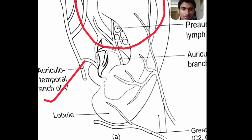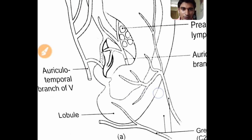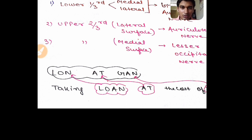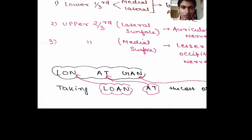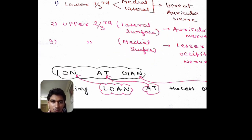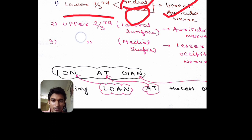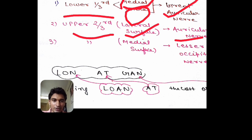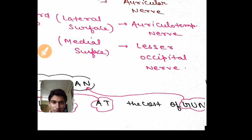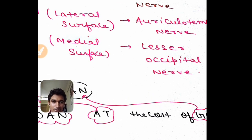Now coming to the medial surface: the lower one-third is supplied by the greater auricular nerve on both sides — whether it is the medial surface or the lateral surface, the lower one-third is supplied by the greater auricular nerve. The upper two-thirds of the medial surface is supplied by the lesser occipital nerve.